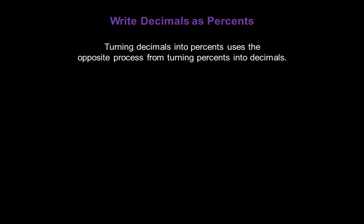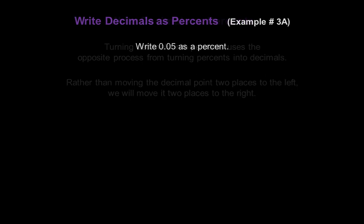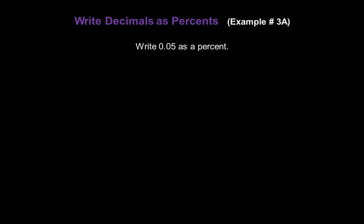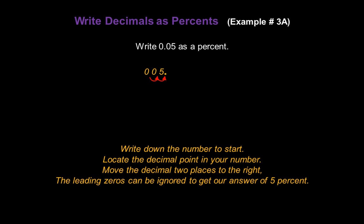Now let's write decimals as percents. Turning decimals into percents uses the opposite process from what we just used. Rather than moving the decimal point two places to the left, we're going to move it two places to the right. So let's write zero point zero five as a percent. Write down the number, locate the decimal point — it's right between the two zeros — and move it two places to the right. The leading zeros can be ignored, and so we have an answer of five percent.